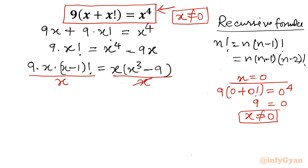So we cancel x from both sides. What is left is: 9 times (x minus 1) factorial equal to x³ minus 9.